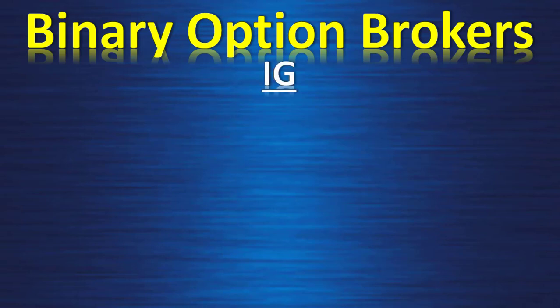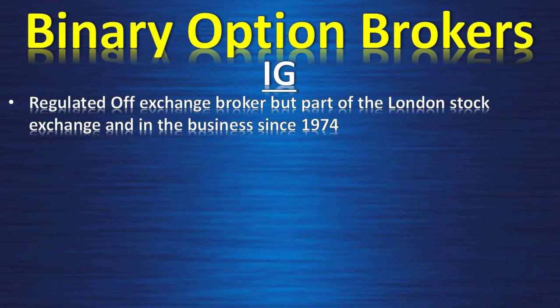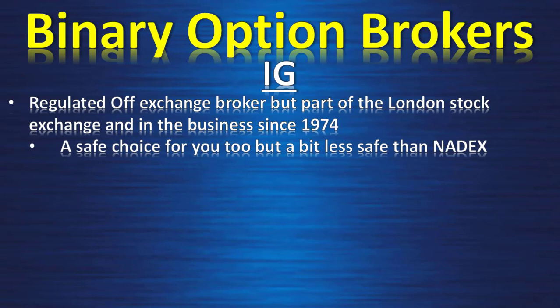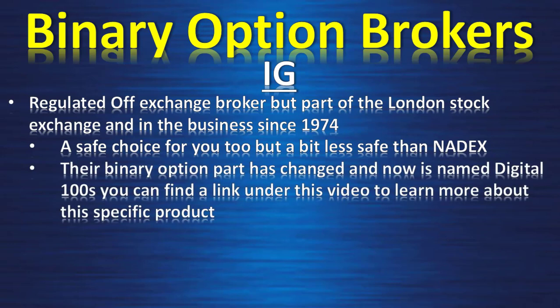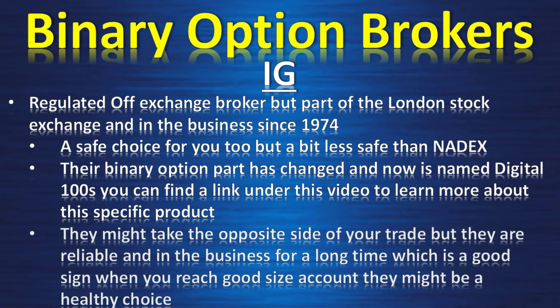The second broker I present is IG. IG is regulated and it's an off-exchange broker, but part of the London Stock Exchange. It's been in business since 1974, so it's quite a solid company — a safe choice, but a bit less safe than Nadex. Their binary option product has changed and is now named Digital 100s; you can find the link below this video to learn more. They might take the opposite side of your trade, but they are reliable and have been in business a long time, which is a good sign. When you reach a good-sized account, they might be a healthy choice.